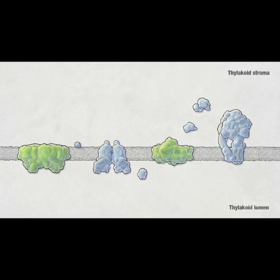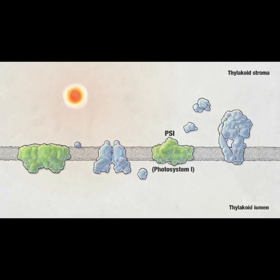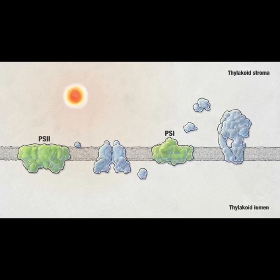Light Reaction. The light-dependent reactions, also known as photolytic reactions, use light energy to make two molecules needed for the next stage of photosynthesis: the energy storage molecule ATP and the reduced electron carrier NADPH. In plants, the light reaction takes place in the thylakoid membranes of organelles called chloroplasts.